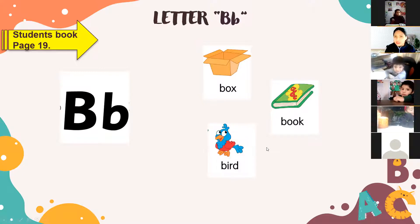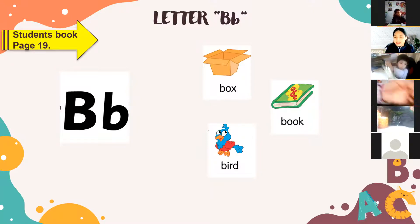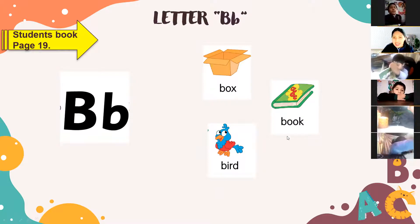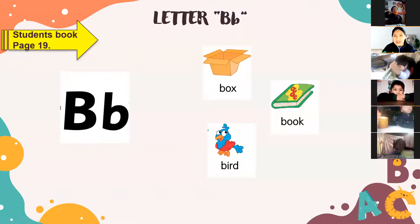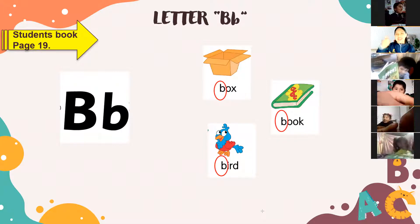B for bird. Repeat after me: bird. Very good, Natalie! 'Pájaro' in English is 'bird,' okay? So this word starts with the letter — what letter? B! B, very good. Excellent. Let's continue now.